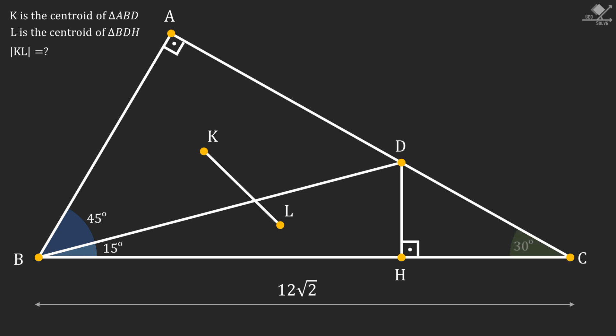We can easily calculate angle BCA as 30 degrees. Using 30-60-90 triangle, the length of the line segment AB can be found as 6 times square root of 2.